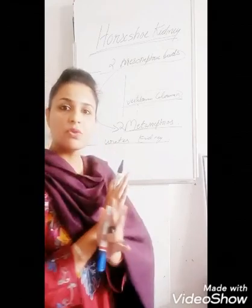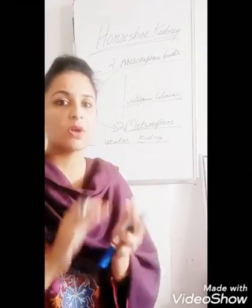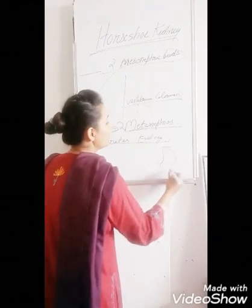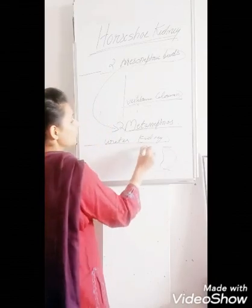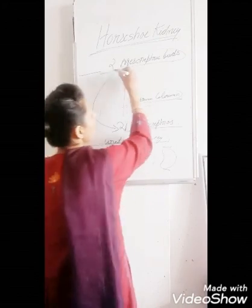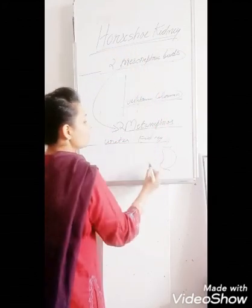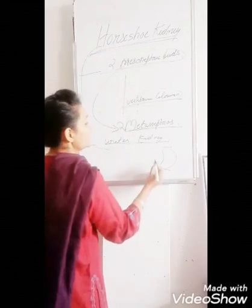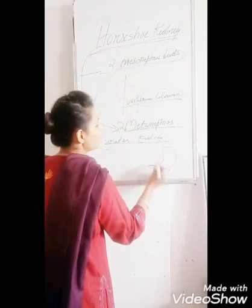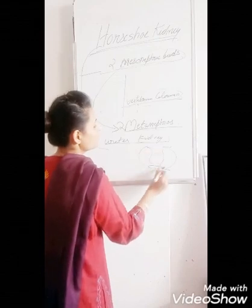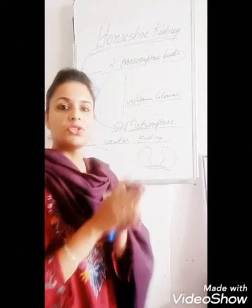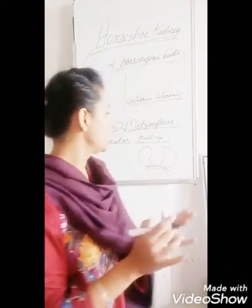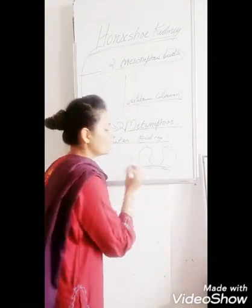Generally there is no fusion of the poles of the kidney. As we know, the kidney has an upper pole and a lower pole. These two kidneys are formed from the two mesonephric buds with no fusion. But in the case of horseshoe kidney, there will be fusion of the lower pole — the fusion generally occurs in the lower pole.